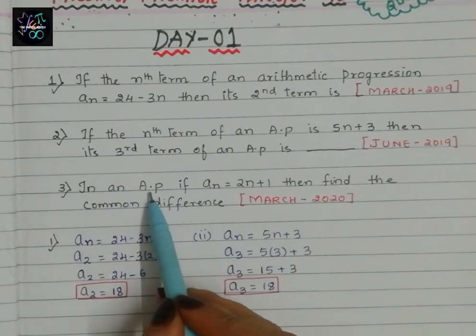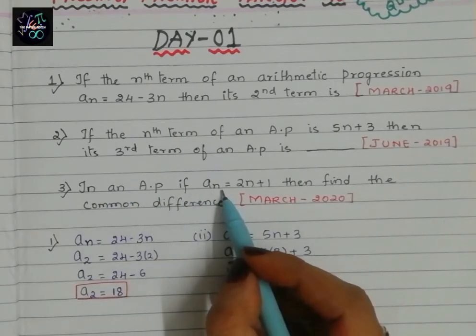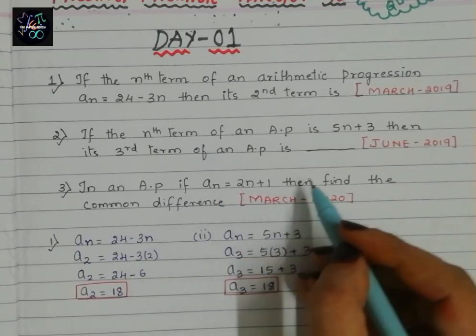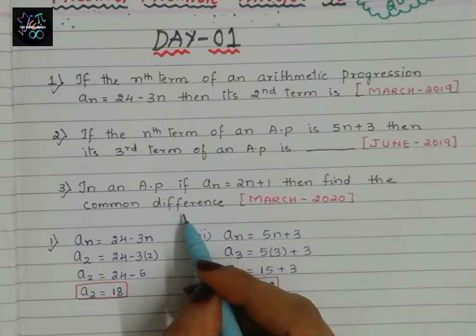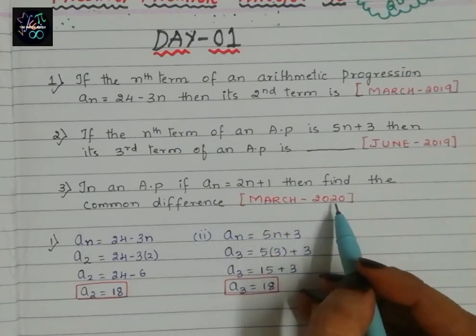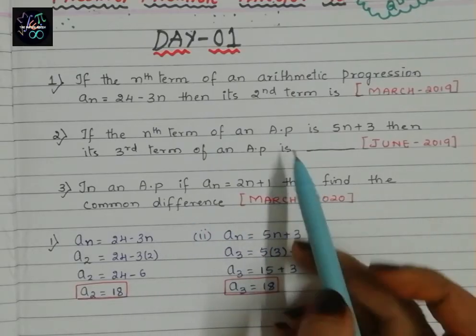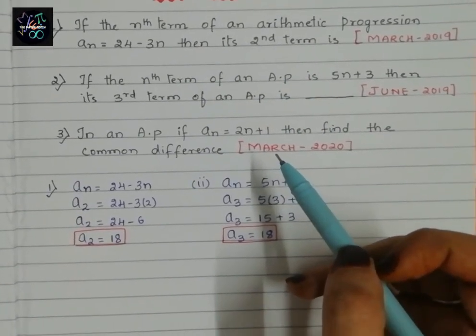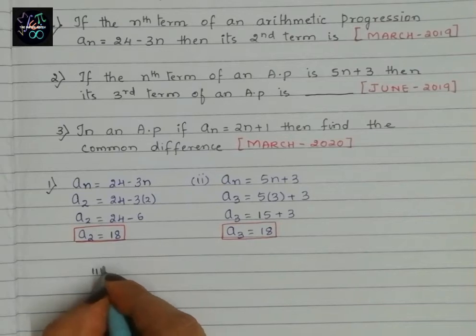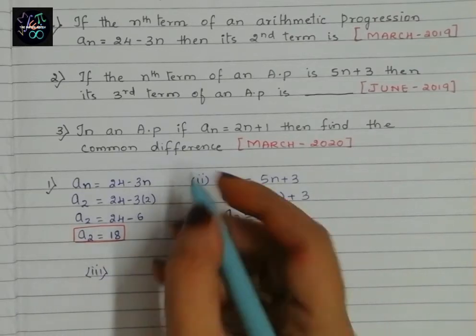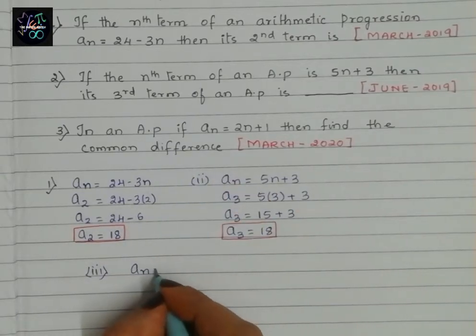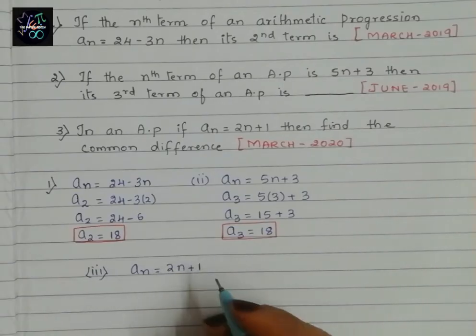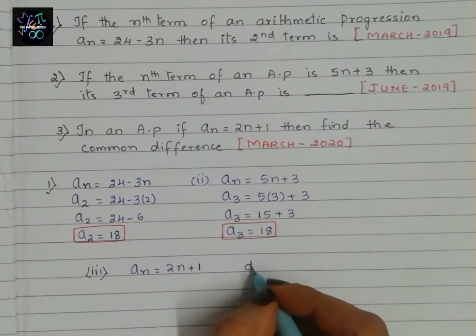Let us see the third question. In an AP, if an equals 2n plus 1, then find the common difference. This is the question from March 2020 — a little different from the previous two questions. The nth term is an equals 2n plus 1, and we have to find the common difference, that is d.